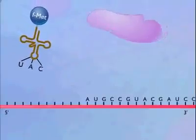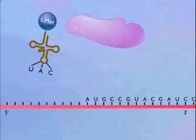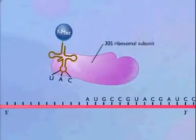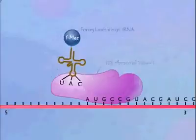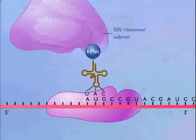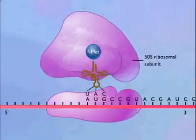In prokaryotic cells, translation is initiated by formation of an initiation complex consisting of the 30S ribosomal subunit, formyl methionyl tRNA, and messenger RNA. The 50S ribosomal subunit then joins the complex.